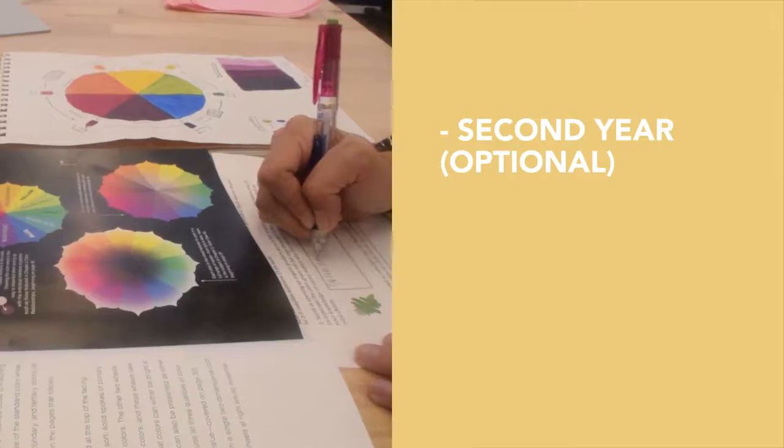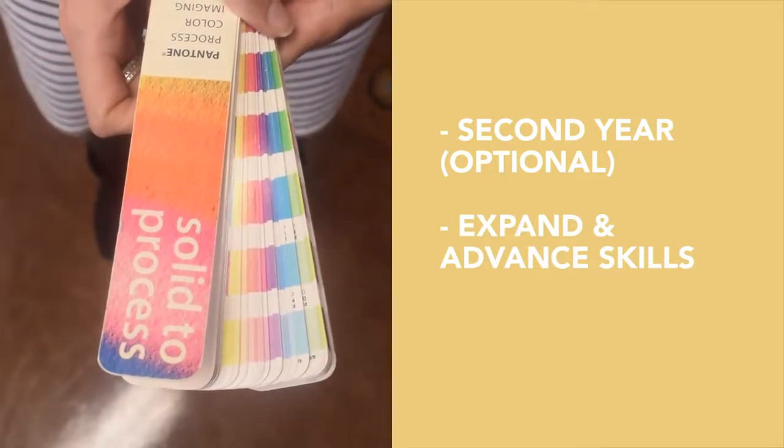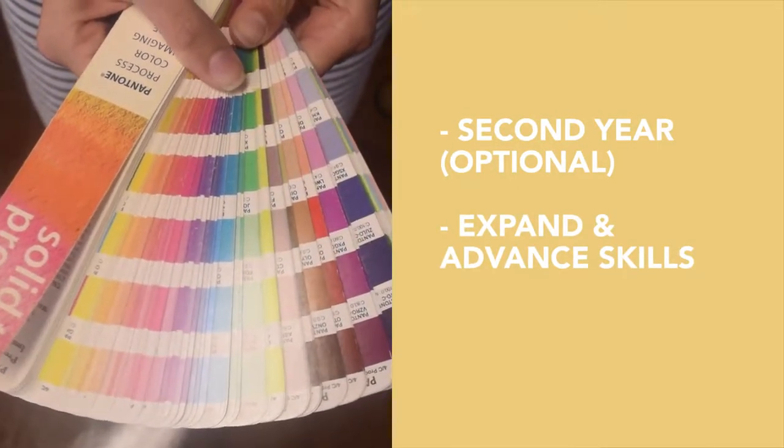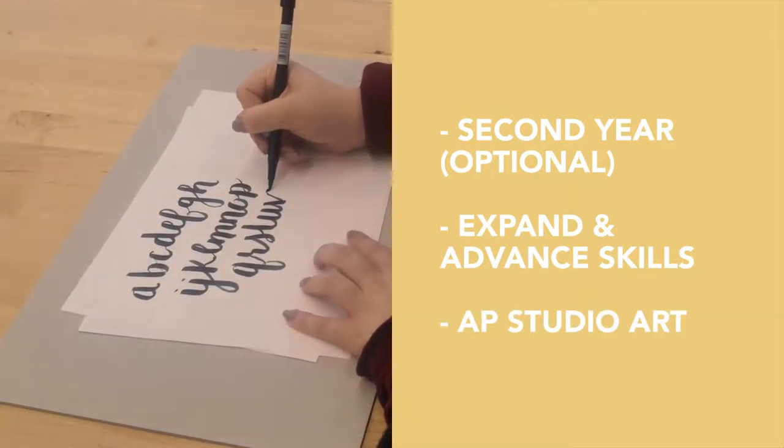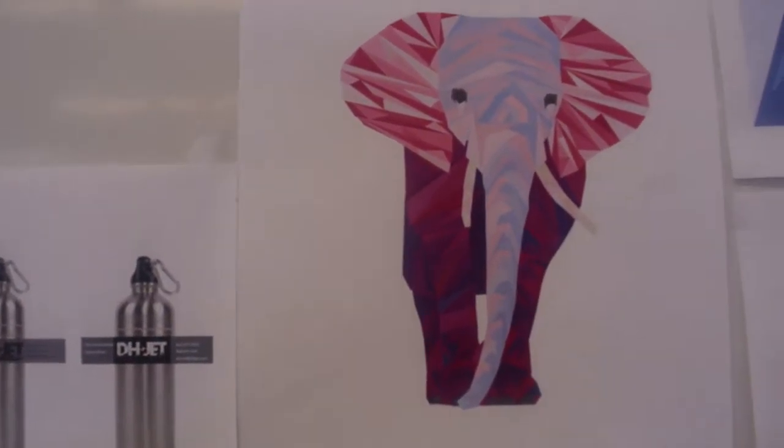In the optional second year of the program, students will build on their foundation by expanding their two-dimensional design skills and advancing their visual communication skills by exploring a variety of design processes and techniques, as well as compositional and aesthetic concepts.